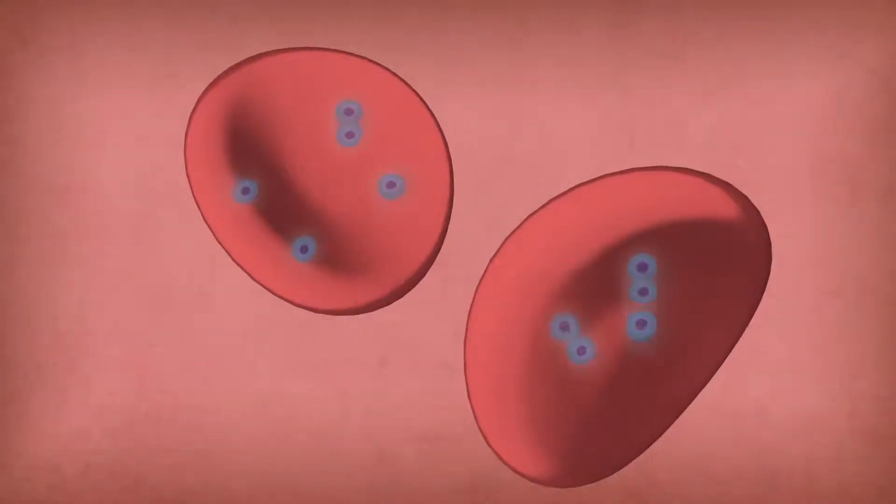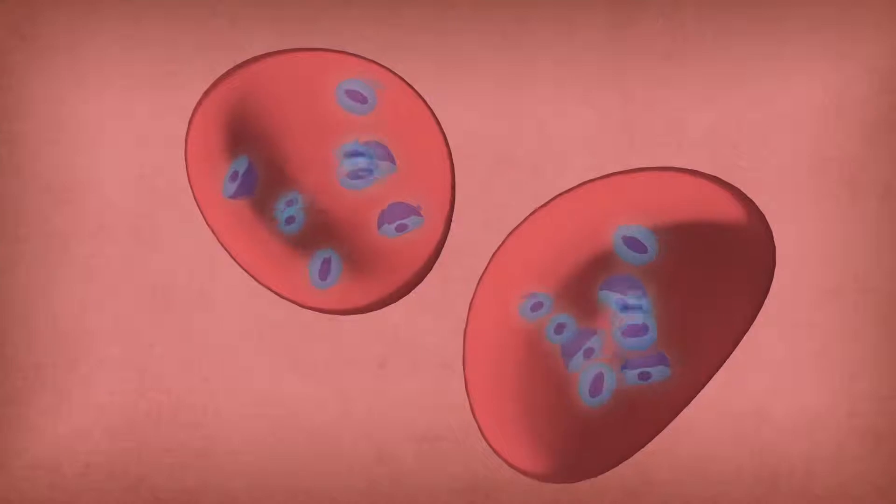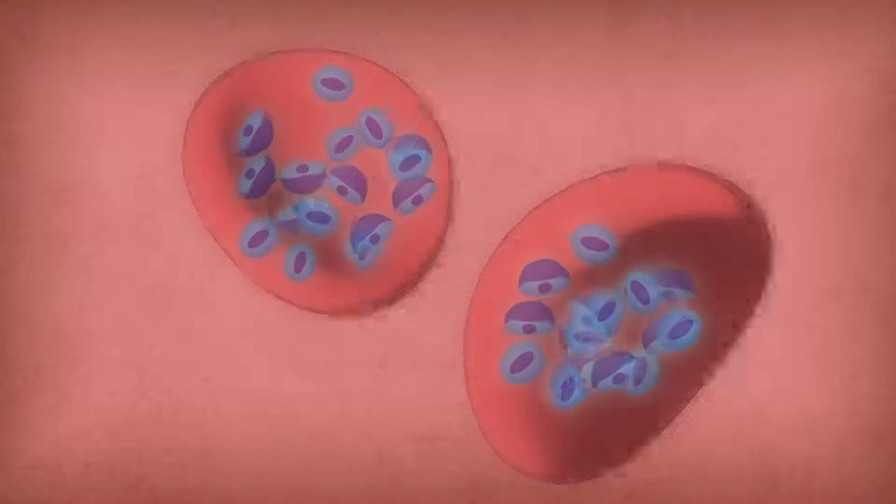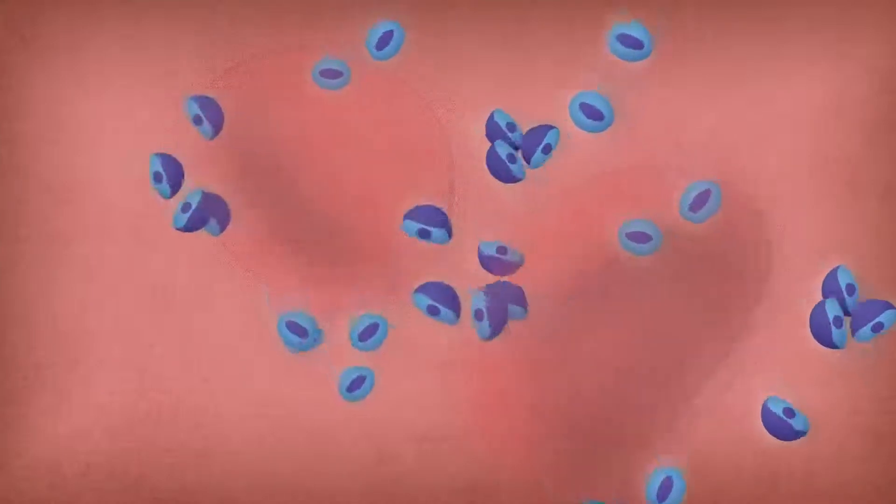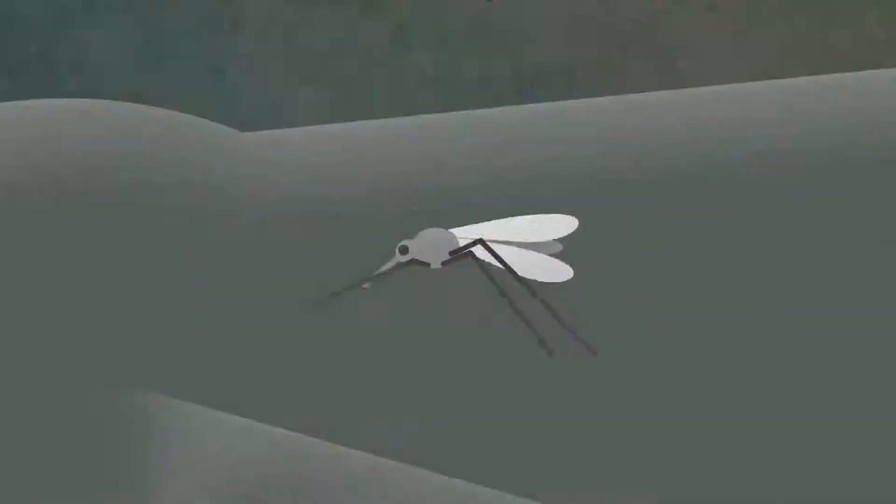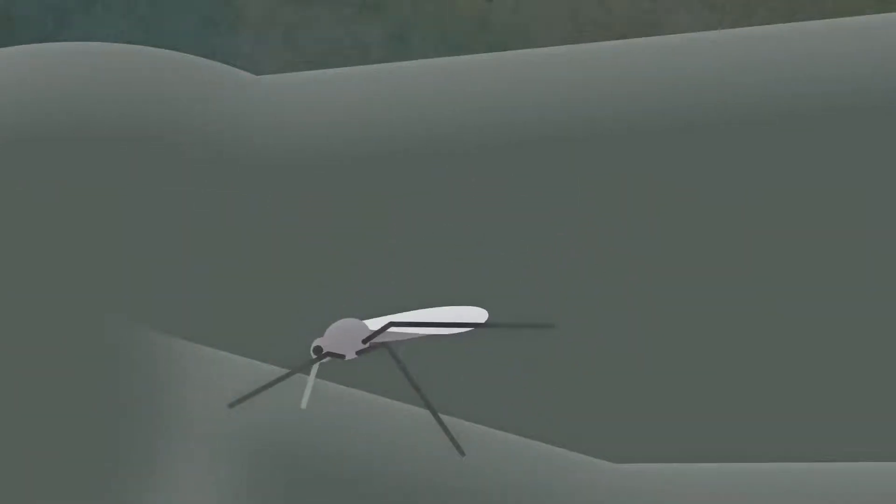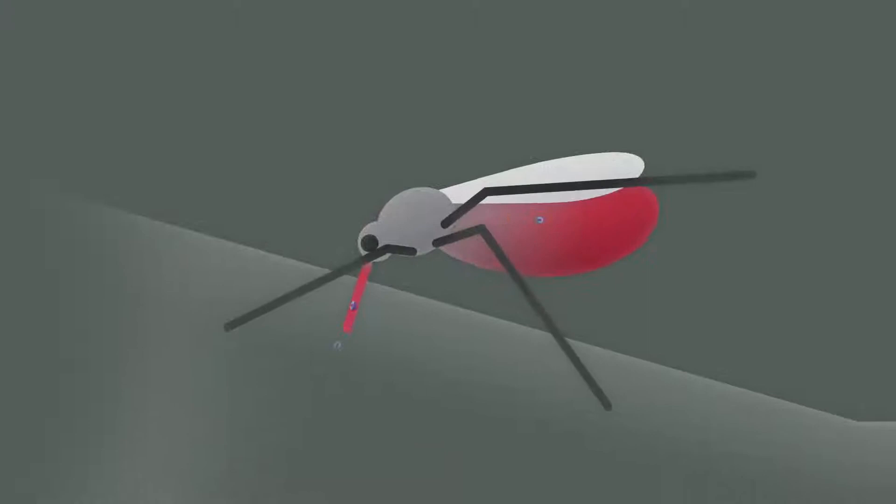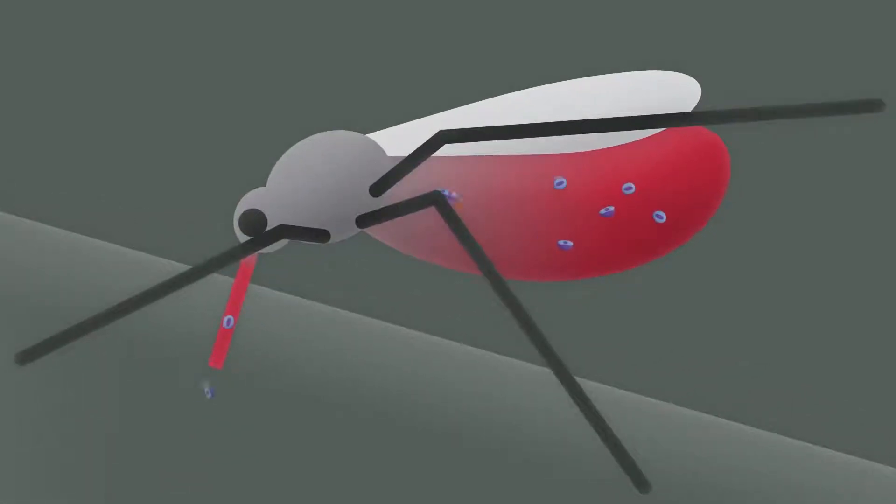The parasites then infect the red blood cells, and quickly multiply, causing them to burst. A new generation of Plasmodium contaminate the blood, and it's their turn to be sucked in by a mosquito. The cycle has come full circle.